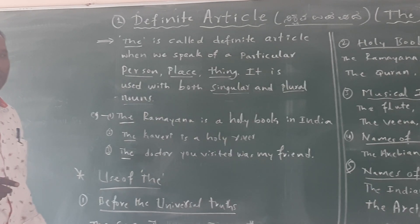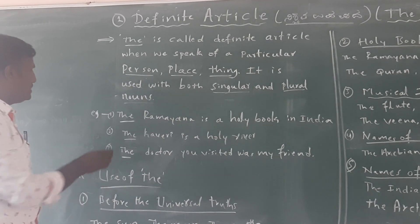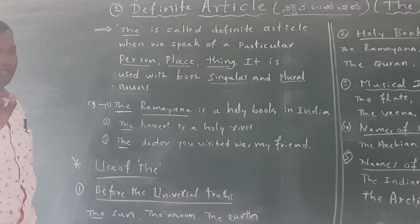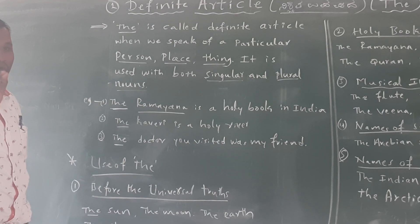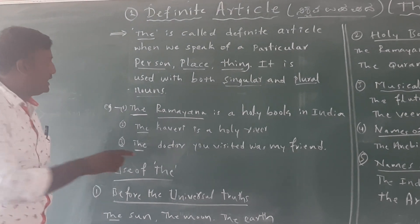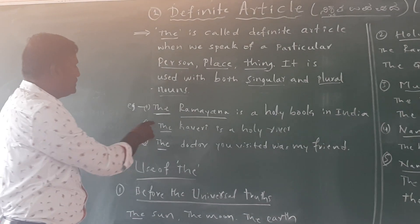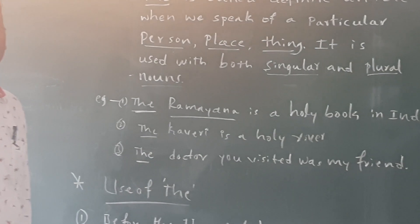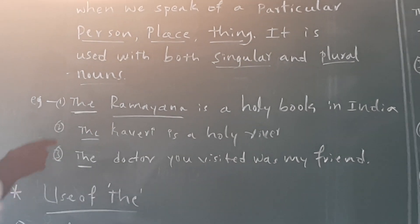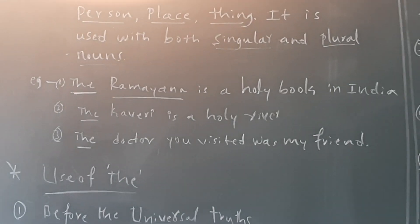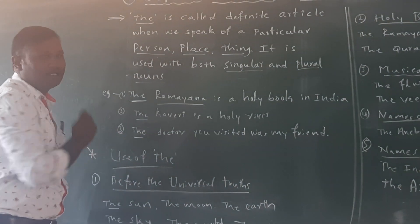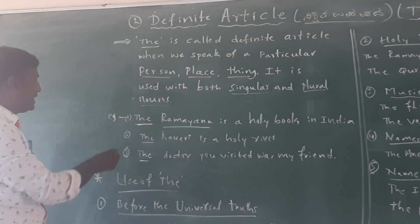For example: 'The Ramayana is a holy book in India.' Why do we use the article before 'Ramayana'? Ramayana is a famous epic or holy book in Indian literature. Before the names of famous books or holy books, we should use the article 'the'. That is why we use 'The Ramayana is a holy book in India.'